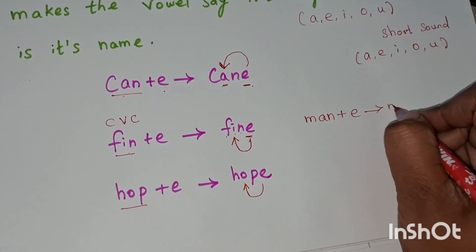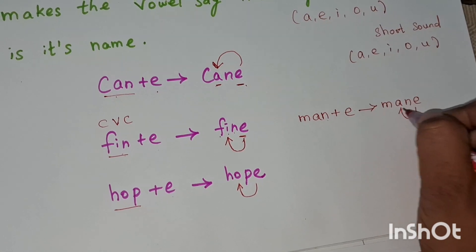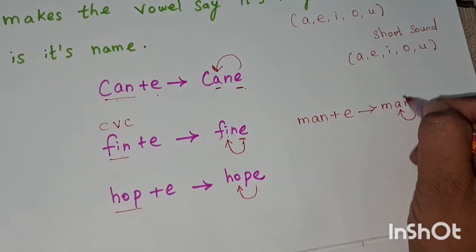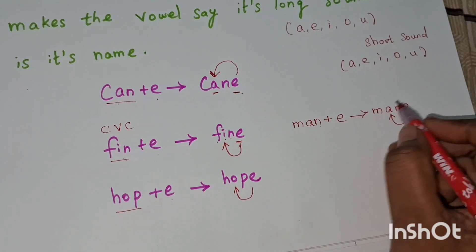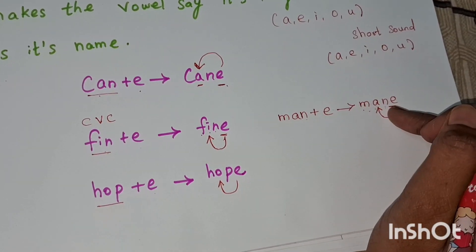When you add e to man, it becomes mane: M-A-N-E. Why is it called mane? Because of the magic e. The e is silent, and the vowel says its name: A. The e is silent - mane.